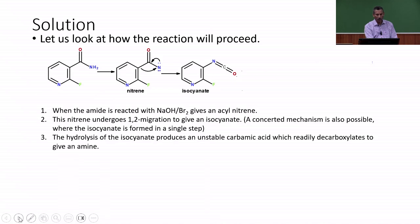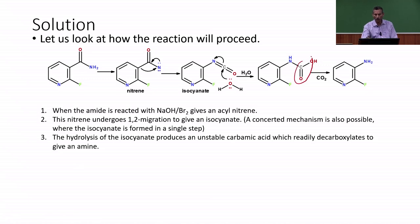Once the isocyanate is formed, this isocyanate is attacked by the solvent water molecule. This results in the formation of a carbamic acid which quickly or readily decarboxylates to give an amine. This CO2 is lost very quickly and this is the driving force for this reaction. We end up with the amine derivative. The final product is going to be the amine and the intermediate in this reaction is a nitrene.